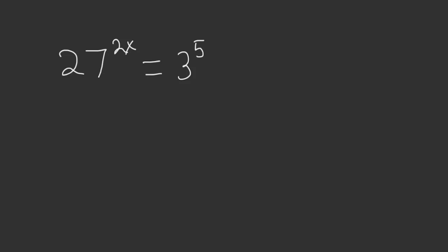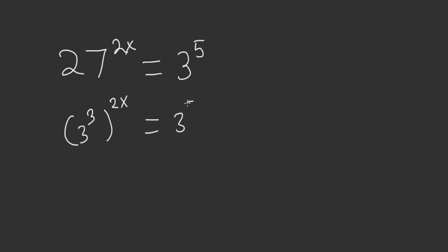Here I will quickly show you how to solve this exponential equation for x. To do that, first we must set the bases equal to each other. 27 can be written as 3 cubed. So you have 3 cubed to the 2x is equal to 3 to the 5.